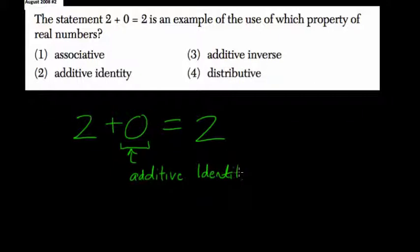Identities do not change the inputs or other values they're being added or multiplied to. So 2 is not being changed by adding 0. So 0 is the identity for addition, the additive identity, which is what we have here.